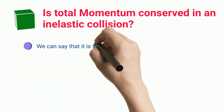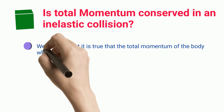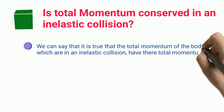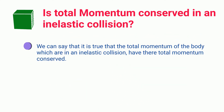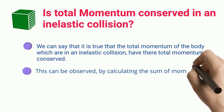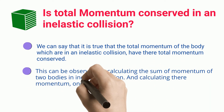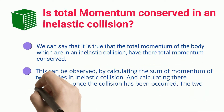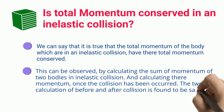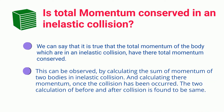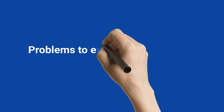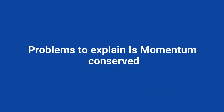It is true that the total momentum of bodies in an inelastic collision is conserved. This can be observed by calculating the sum of momenta of two bodies in an inelastic collision and calculating their momentum once the collision has occurred. The two calculations — before and after collision — are found to be the same.